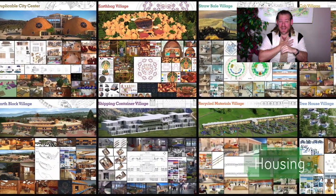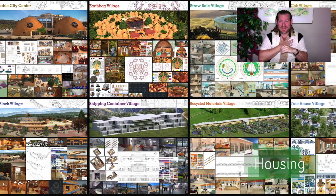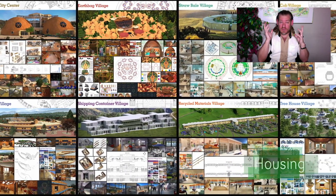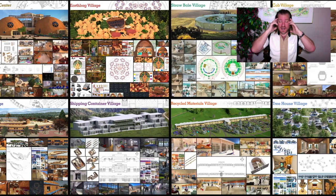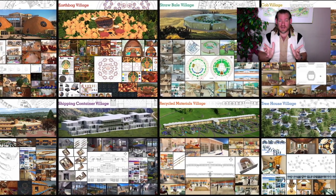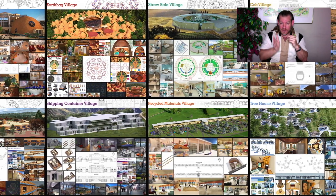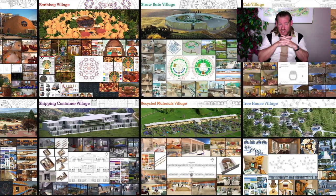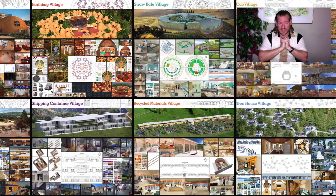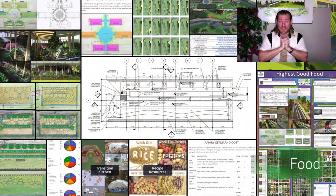My name is Jay Stable and I'm the executive director of the One Community 501c3 non-profit organization. One Community is bringing together people with the consciousness and the desire for the highest good of all life on this planet to build sustainable, regenerative, and self-replicating teacher demonstration hubs as a pathway to global sustainability.